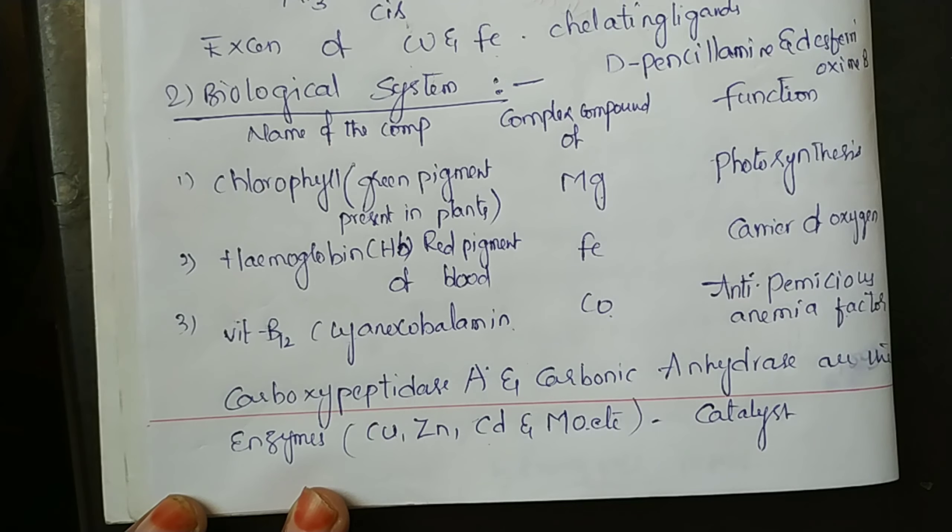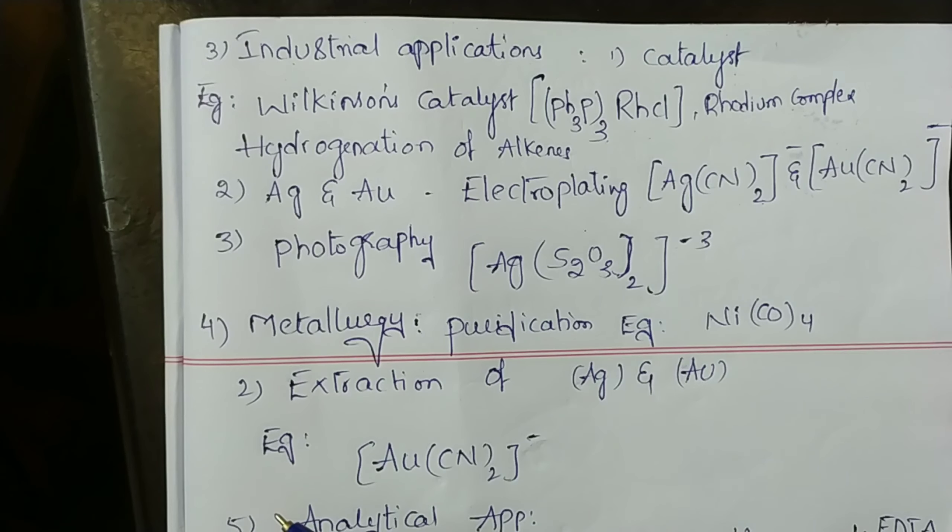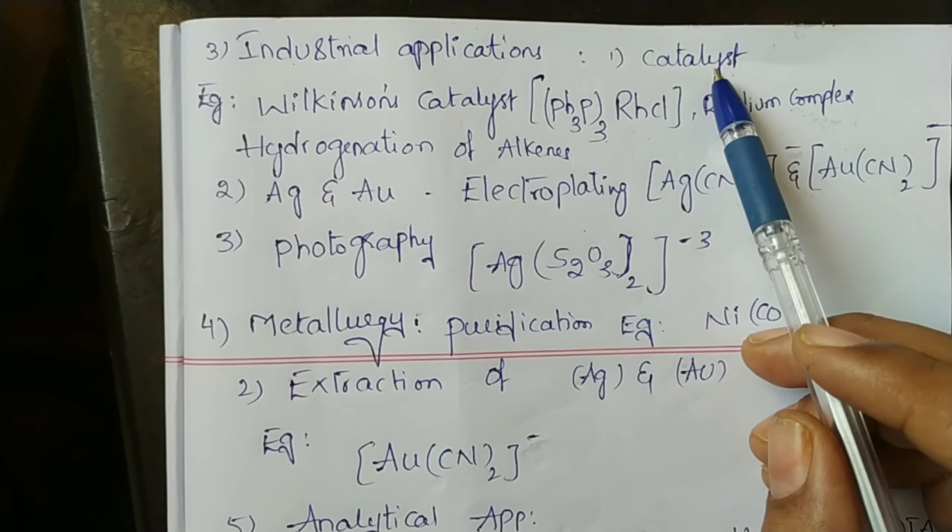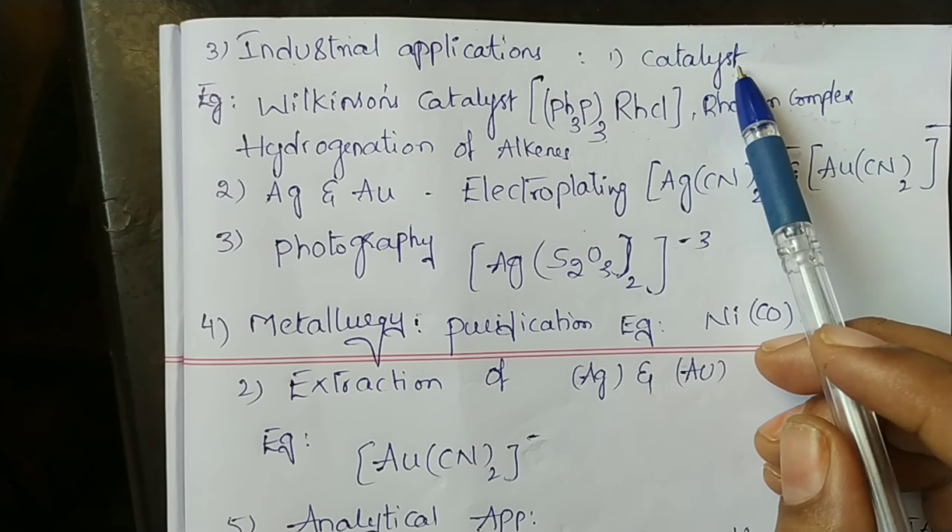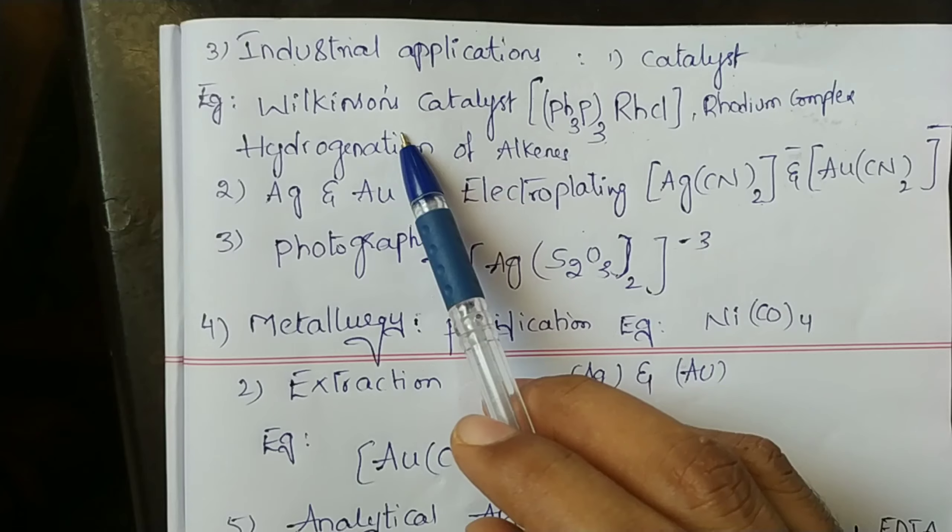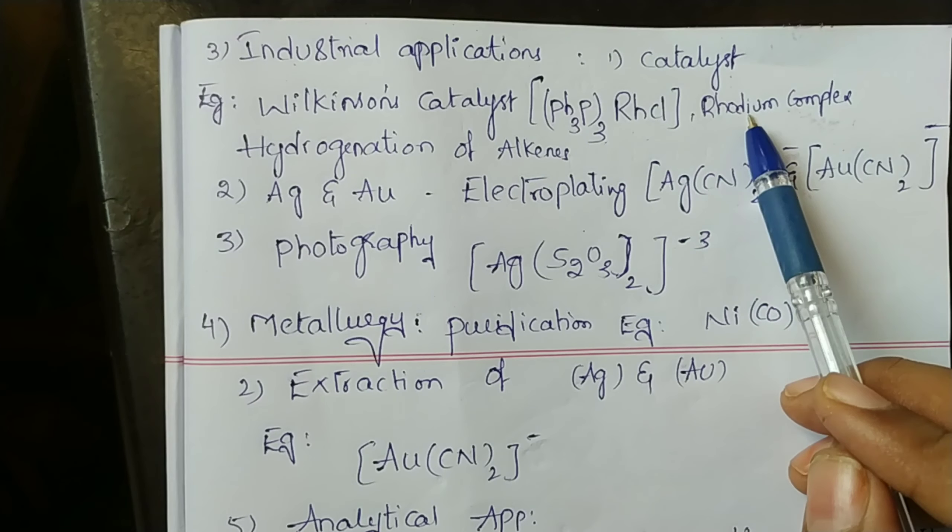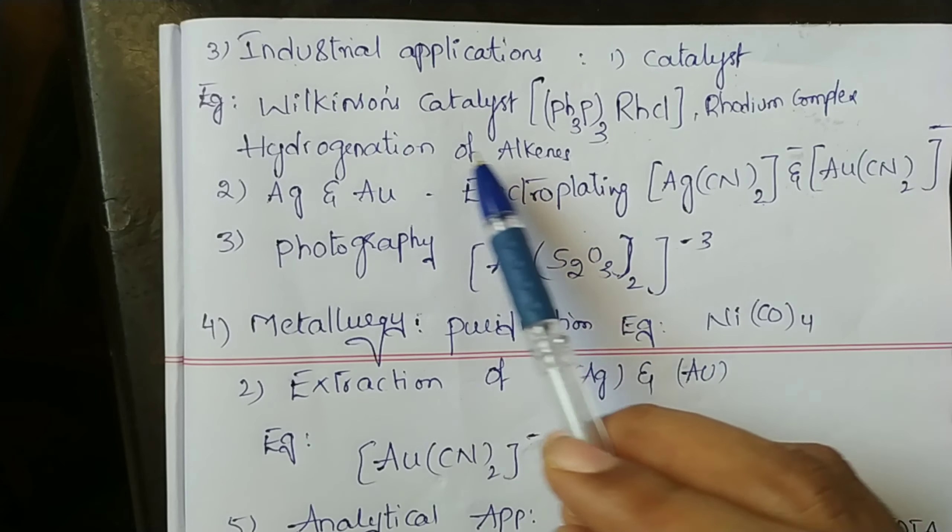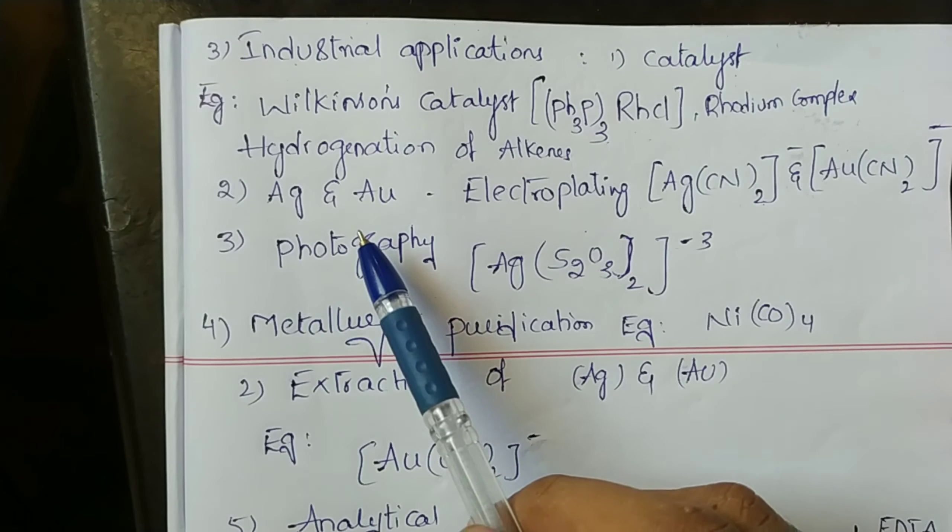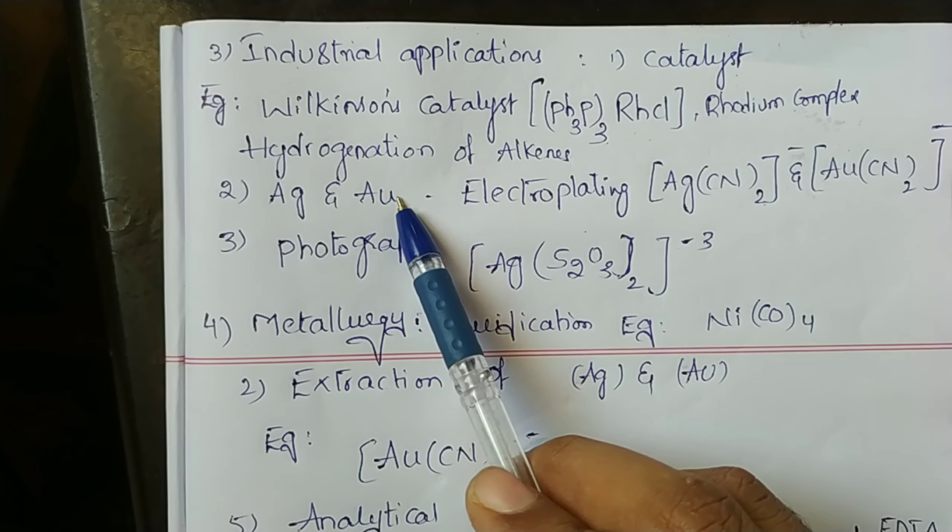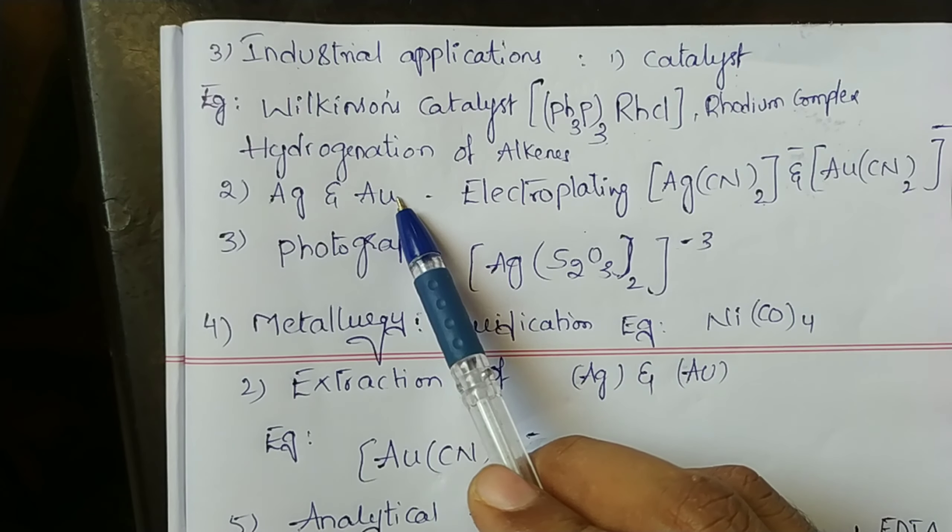In industrial applications, coordination compounds are used as catalysts. Example: Wilkinson's catalyst is a rhodium complex used for hydrogenation of alkenes. Many silver and gold complexes are used in the process of electroplating.